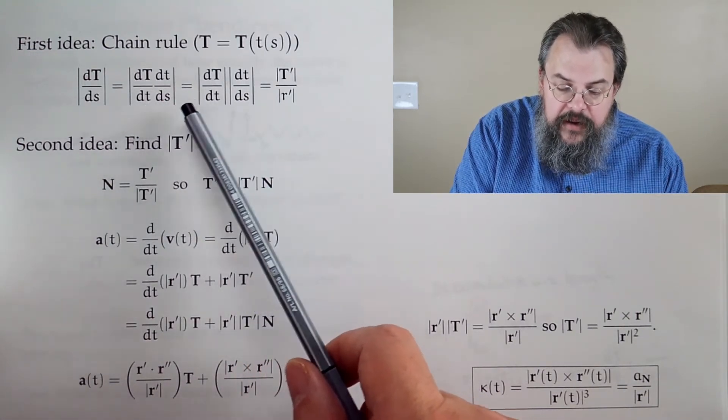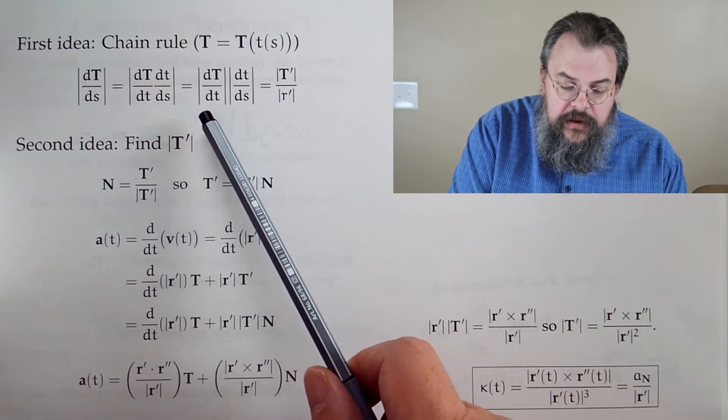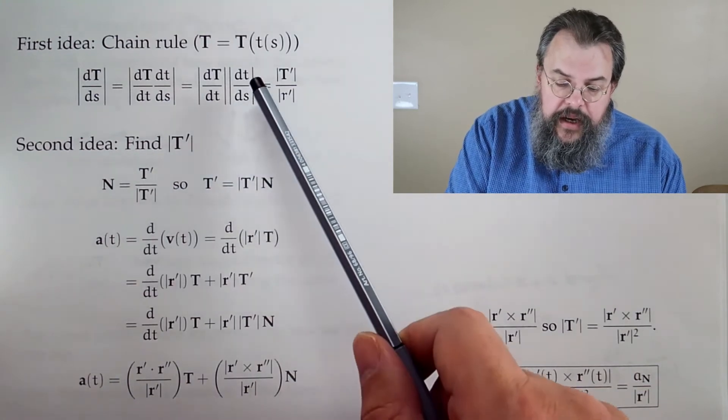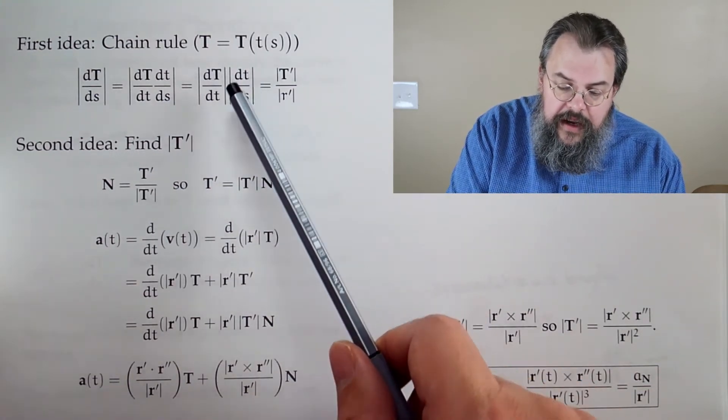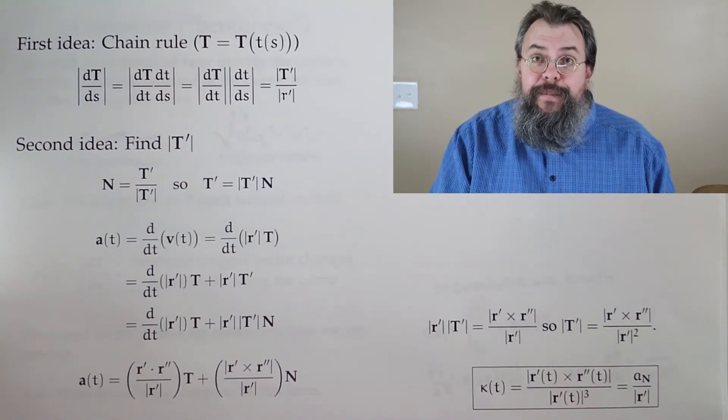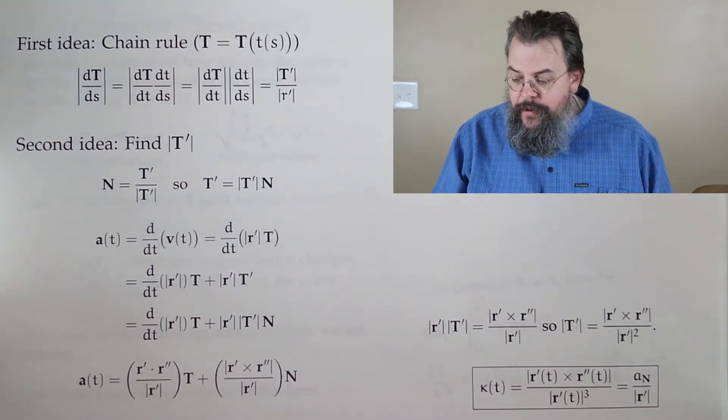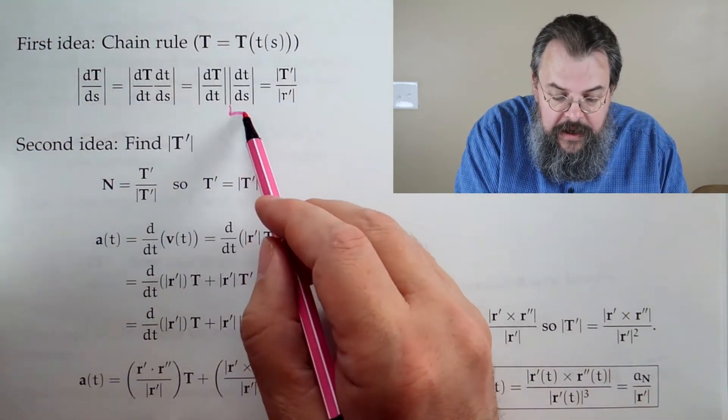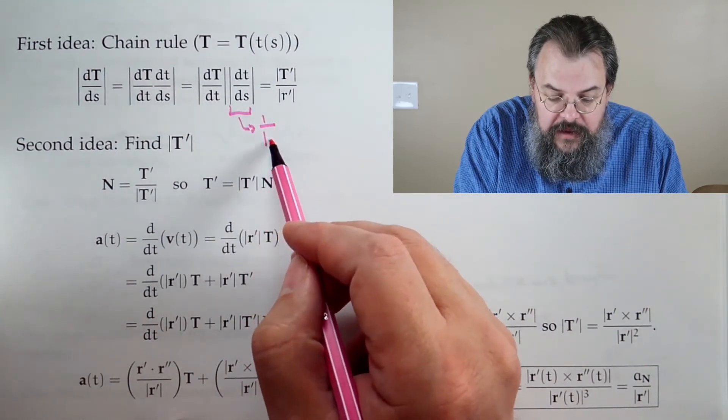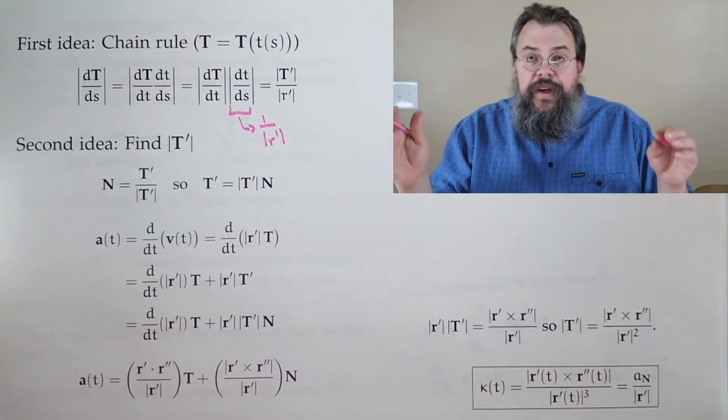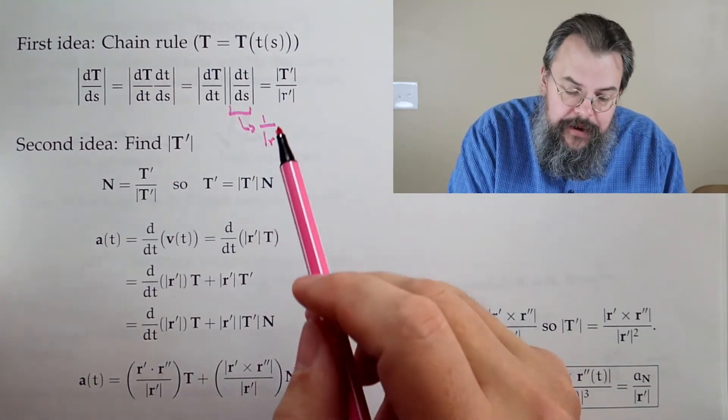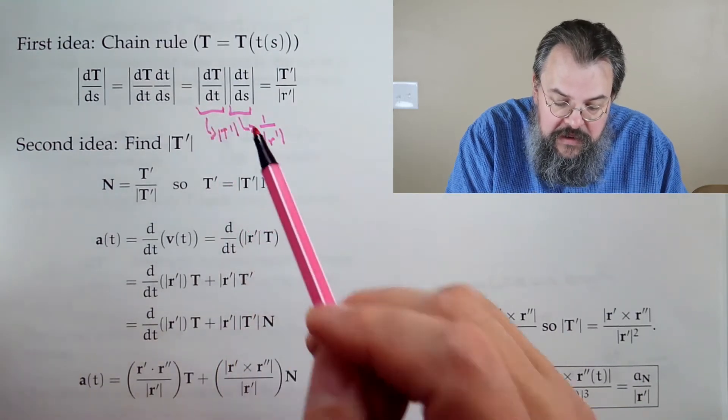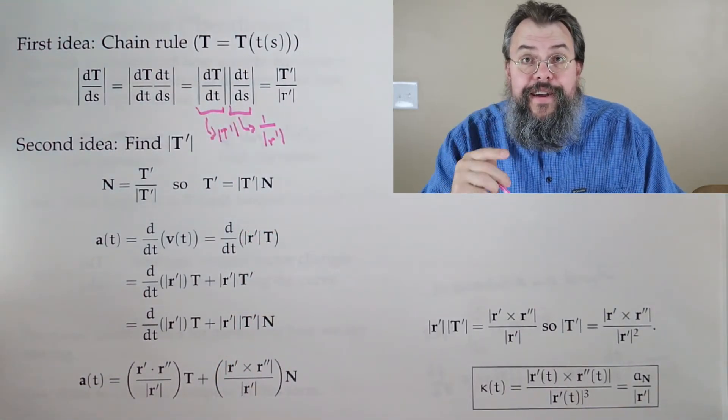Take the magnitudes. We know that this part here, DT/DS, is the same as 1 over the magnitude of r'(T). Perfect. So now we have to find this piece, which is the magnitude of T'. That's our next step, our next goal.